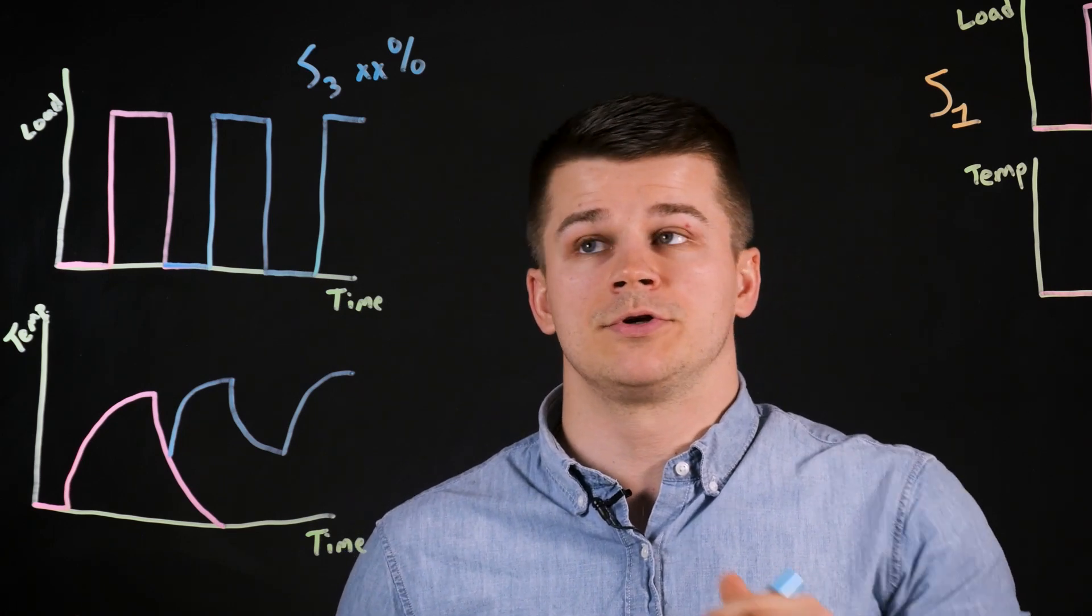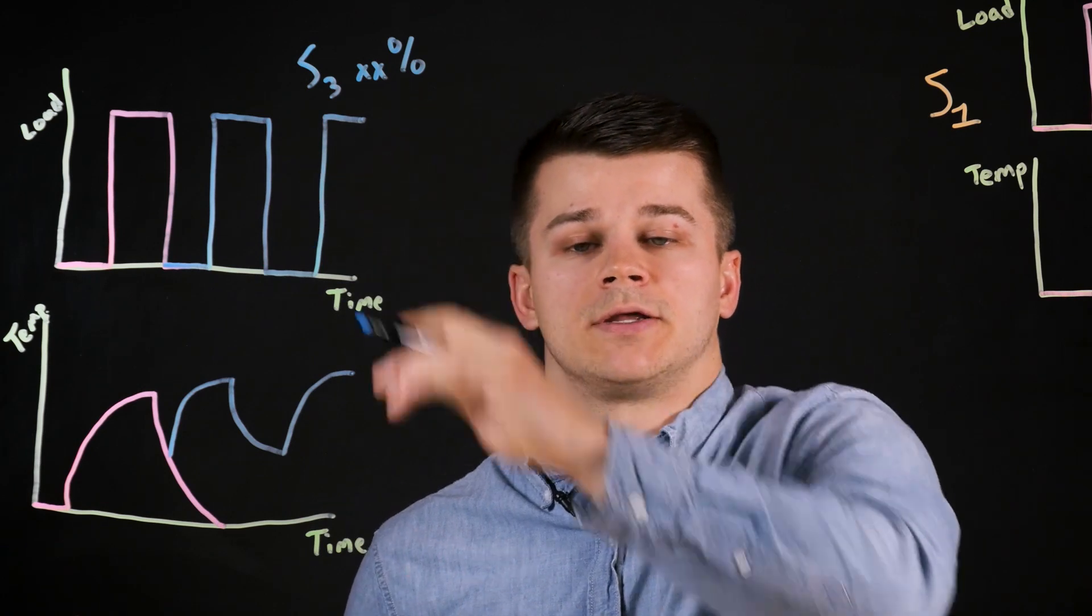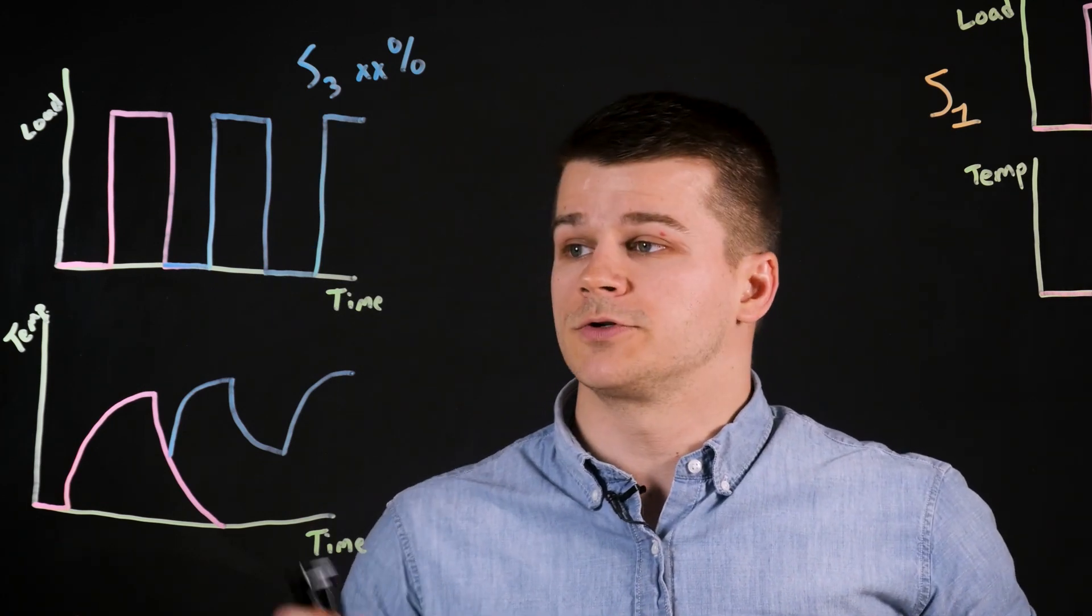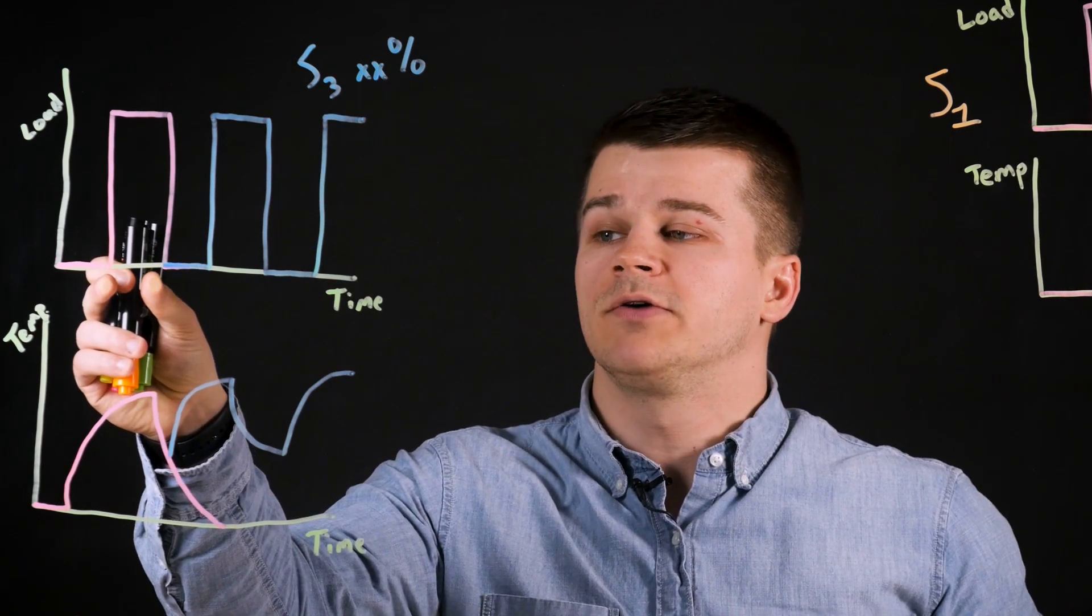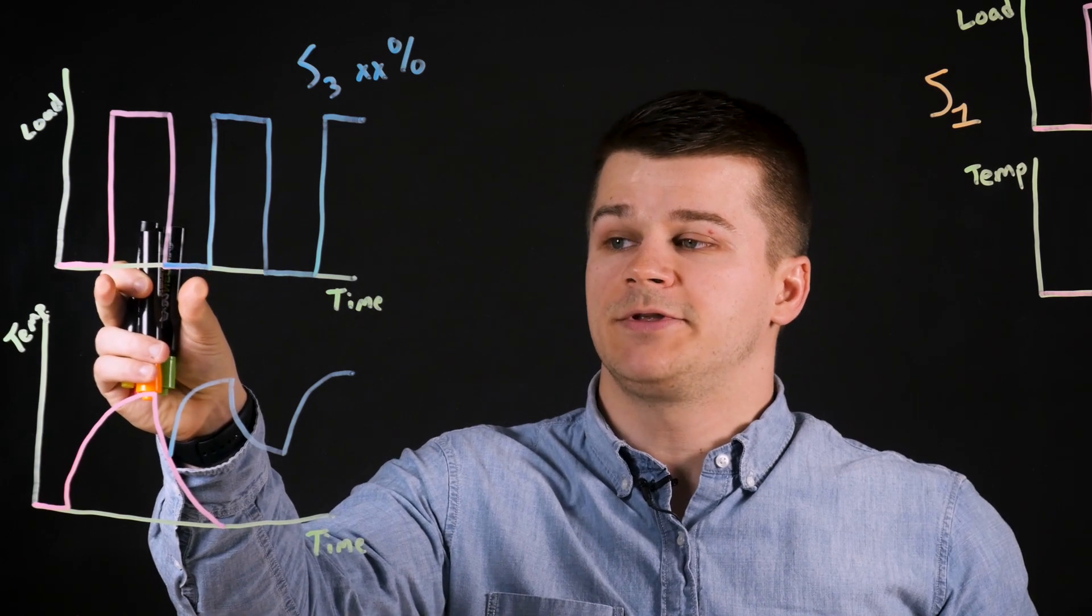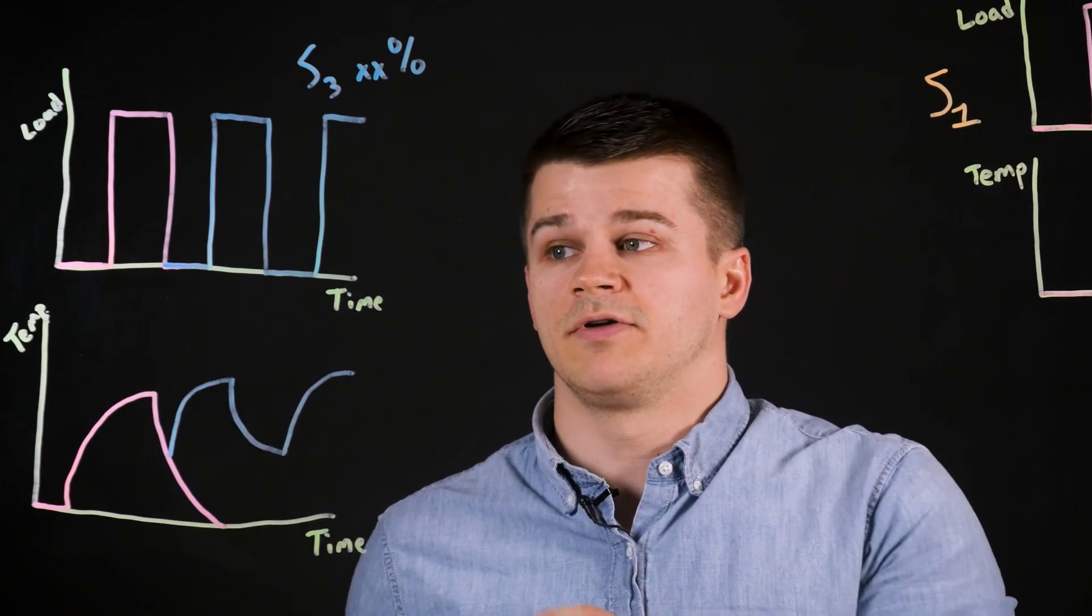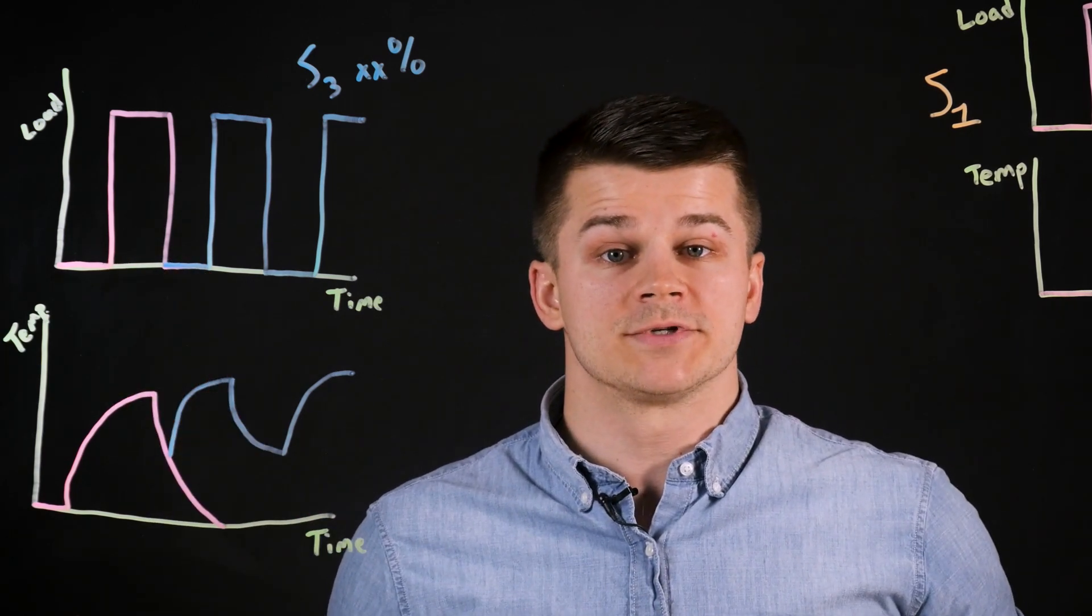Intermittent periodic duty is referred to as S3 followed by a percentage. The percentage refers to the amount of time under load divided by the total amount of time of the cycle. So in this graph, it would be roughly 50% duty.